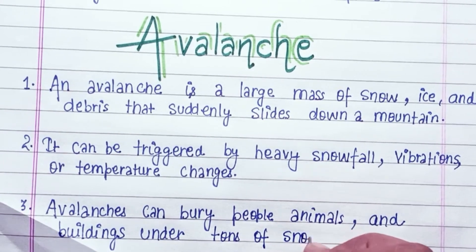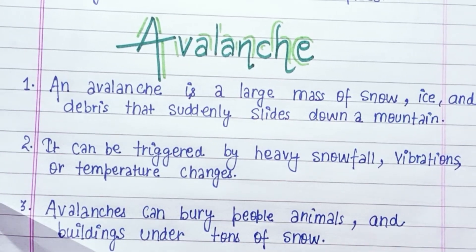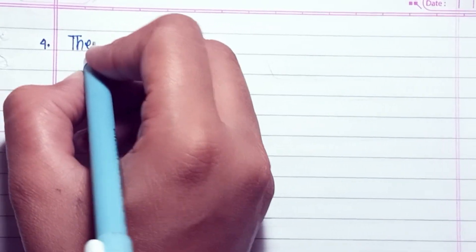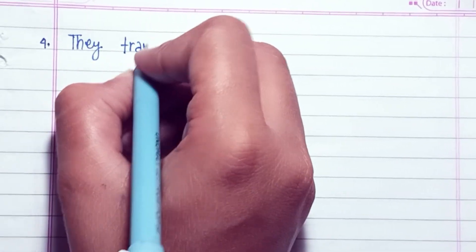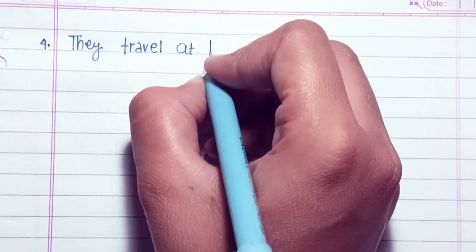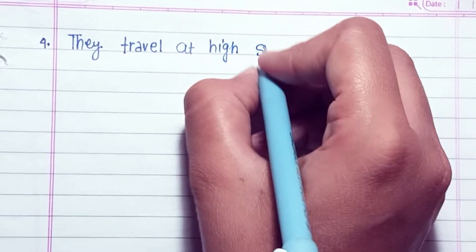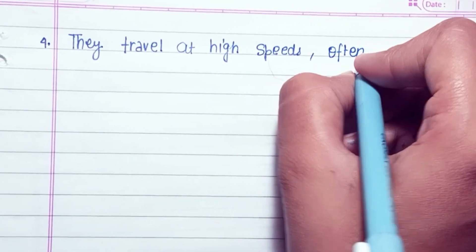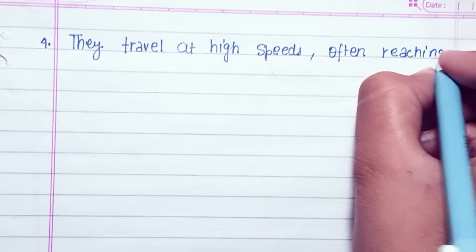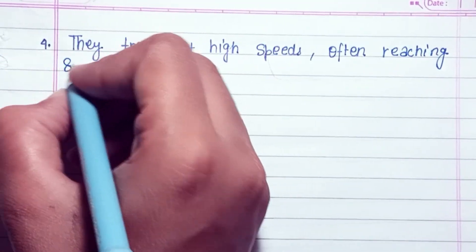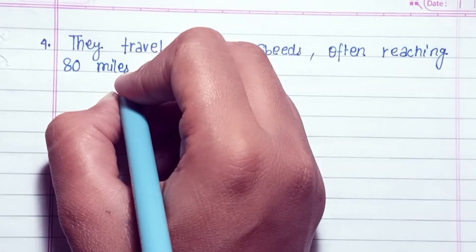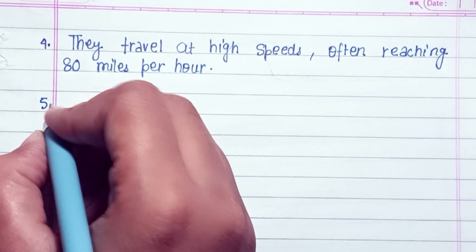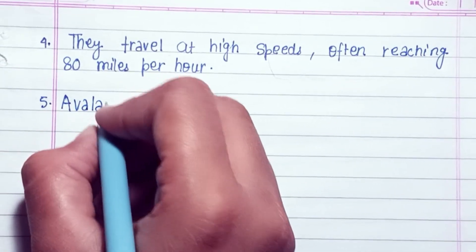An avalanche can bury people, animals and buildings under tons of snow. They can travel at high speeds, often reaching 80 miles per hour.